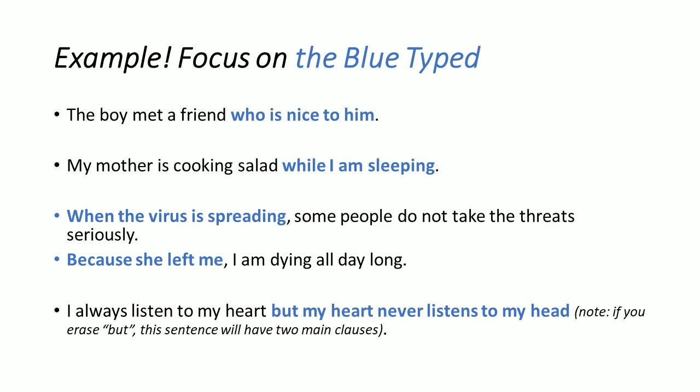Focus on the dependent clauses in these examples: 'who is nice to him,' 'while I am sleeping,' 'when the virus is spreading,' 'because she left me' — all are dependent clauses that cannot stand alone without an independent clause. Note: in 'I always listen to my heart but my heart never listens to my head,' if you erase 'but,' this sentence becomes two separate main clauses, each ending with a period.